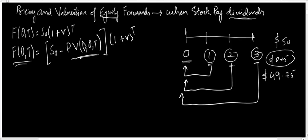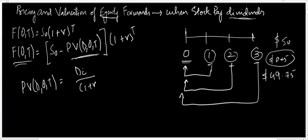The present value of dividends is calculated simply by taking each dividend cash flow and discounting it at (1 + r) raised to power t. In this way we can calculate the present value of dividends. Now let me also calculate the value of the forward contract at any arbitrary point between time zero and time t.